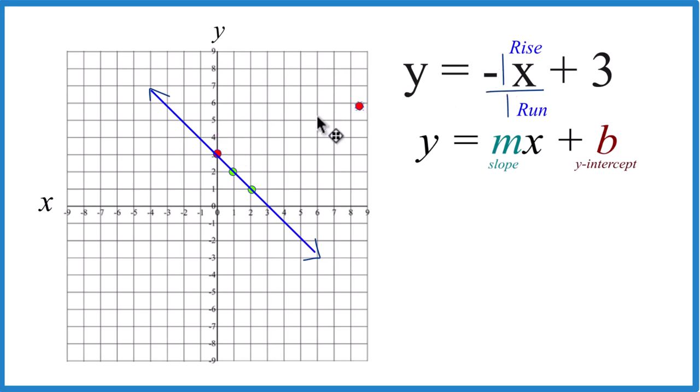But this negative here means we're not going to rise. We're going to go down 1 and then run 1. From there, go down 1, run 1, and so on. And it's the same line that we got before, which kind of makes sense. It's the same equation.